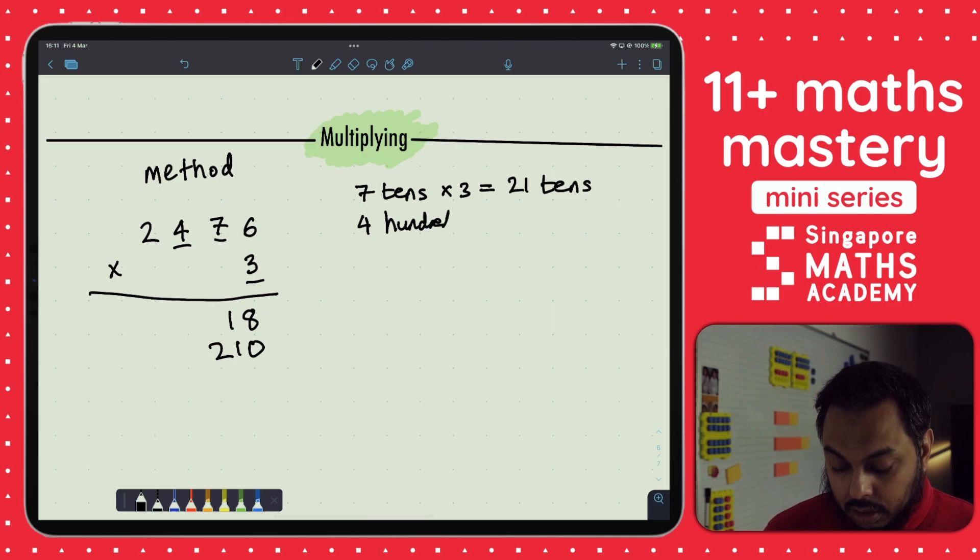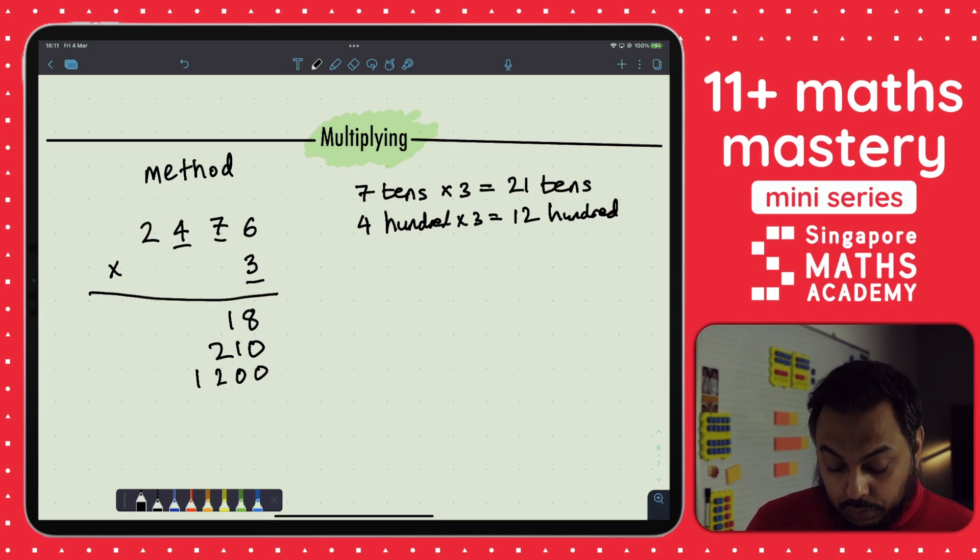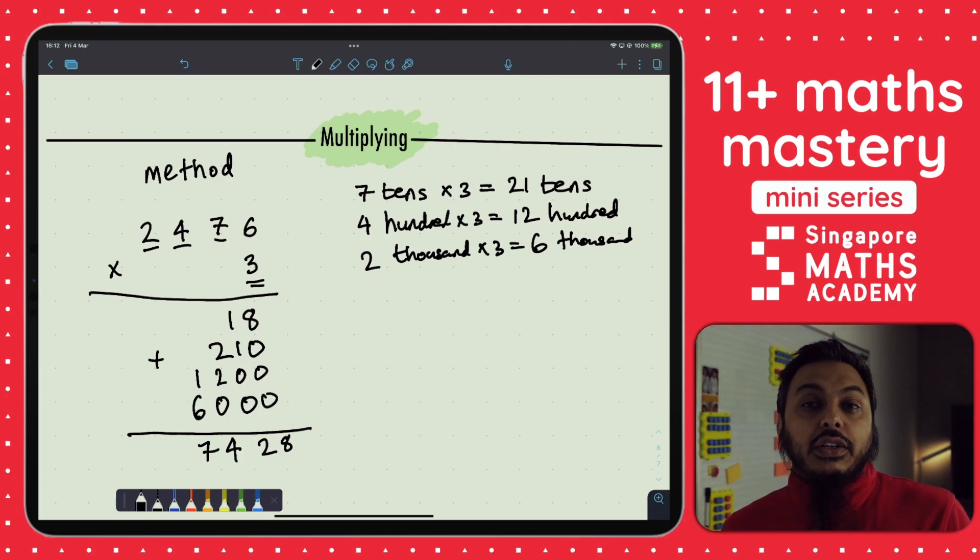Then I've got 400 here. 400 times three is 1,200. How do we write 1,200? 1,200. And finally we've got three times 2,000. So I've got my 2,000s here times three, which is going to be 6,000.